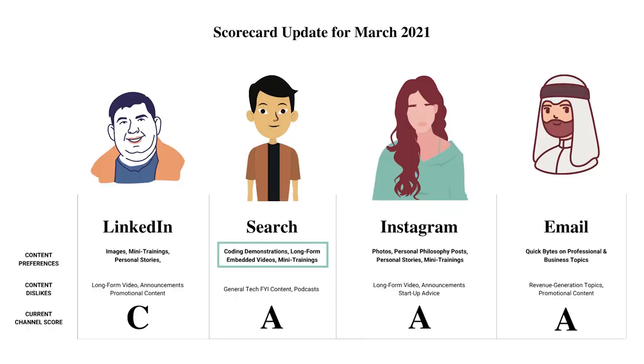I also narrowed in on what seems to be working great on each channel. On search — my website — everyone loves coding demonstrations. Whereas on Instagram, people really like personal stories and pictures in real life of my family; it's more of a personal, get-to-know-you vibe. The whole point is that when you do channel scoring, you can get a really good view on what people are looking for from your company on a channel-by-channel basis, and really help increase personalization and create relevancy and intimacy that will make it easier for your company to make sales.